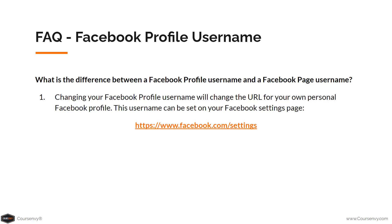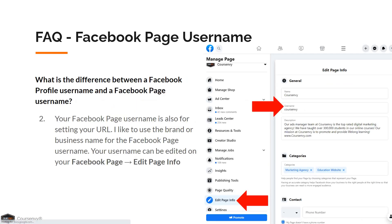Changing your Facebook profile username will change the URL of your own personal Facebook profile. This username can be set on your Facebook settings at facebook.com/settings. As for the Facebook page username, it is also for setting your URL — I like to use the brand or business name. Your username for your Facebook page can be edited by navigating to your Facebook page, selecting edit page info in the left sidebar, then editing your username.